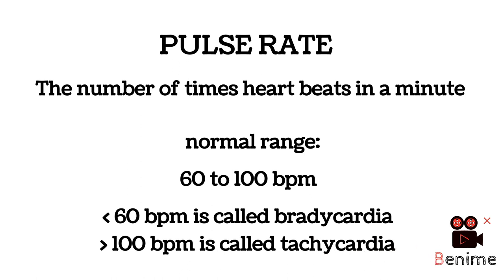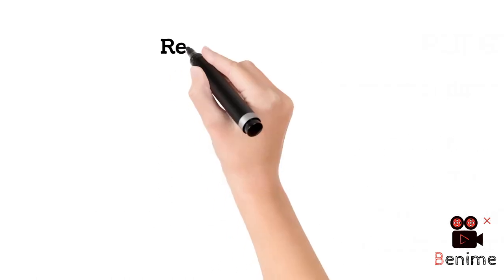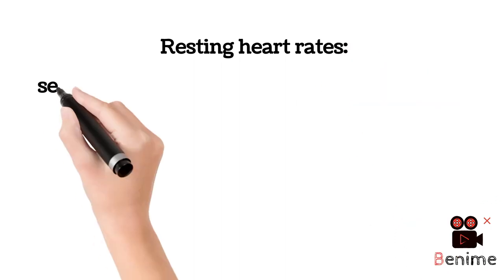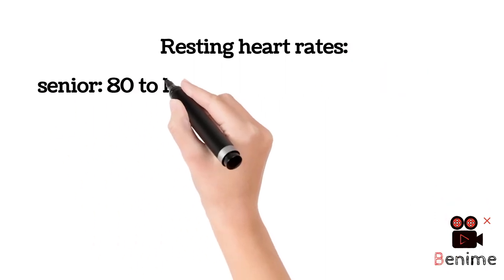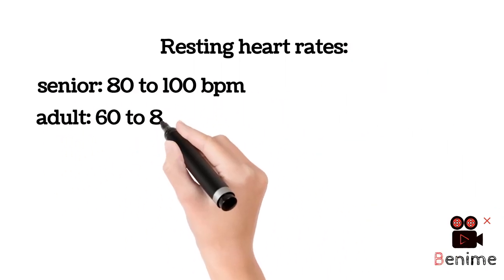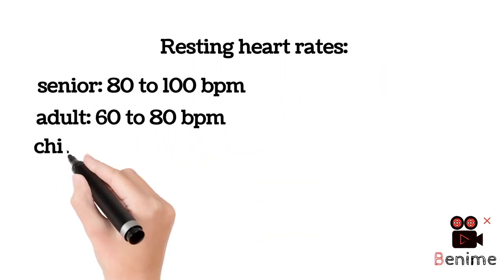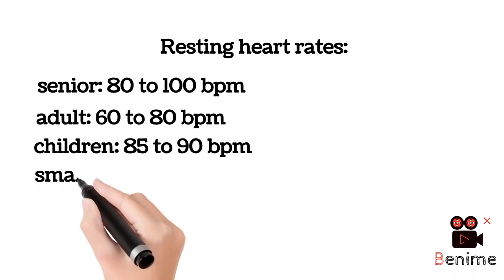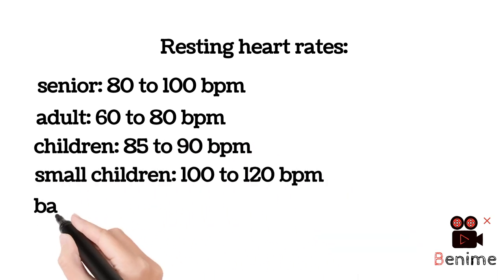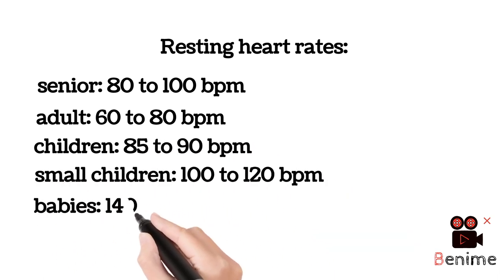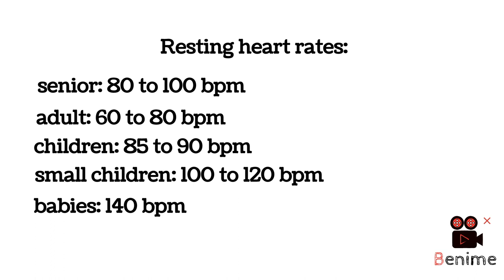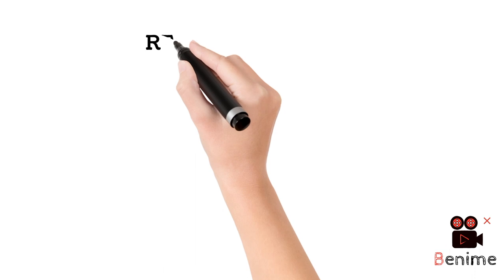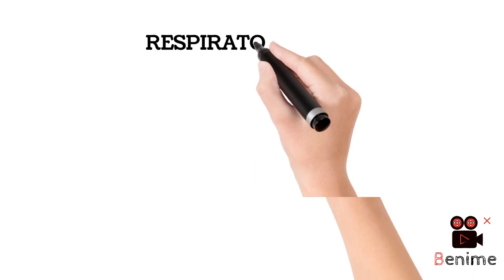When the heart rate increases to more than 100 beats per minute, it is called tachycardia. Heart rates vary among individuals — you can stop the video and note it down. One important thing to remember is that infants and neonates have a higher heart rate, up to 140 beats per minute, because of the circulation required for their rapid growth.